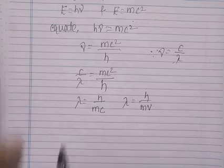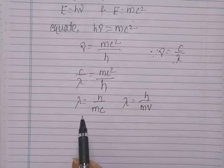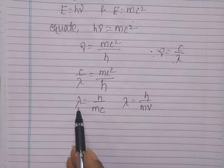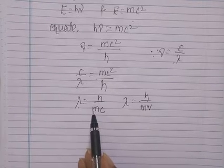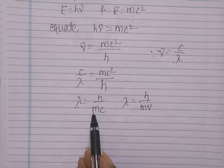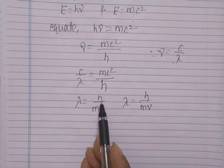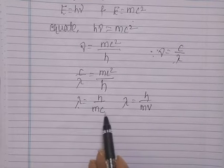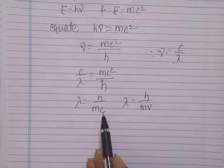Here, λ is the wavelength, M is the mass of the particle, V is the velocity, H is Planck's constant, and C is the velocity of light.